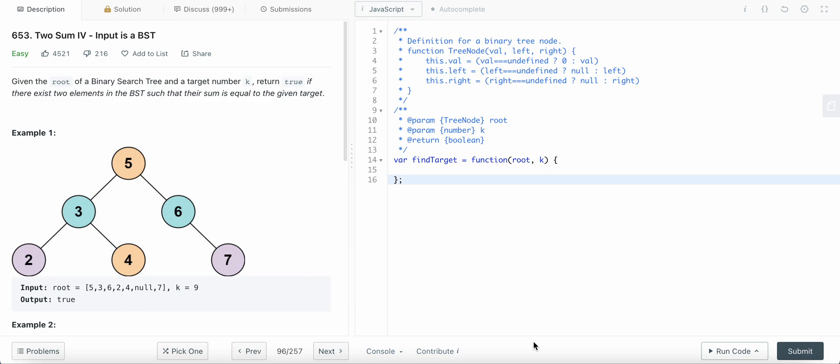So here in the two sum problem we actually create a set where we store the complements of the elements that we encounter in the array. And here also we are gonna do the same, so I'm gonna create a set where I'm gonna store the complements of each of these elements and each of these elements I'll traverse one by one.